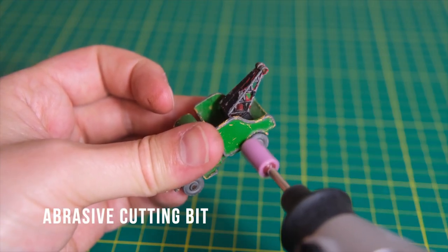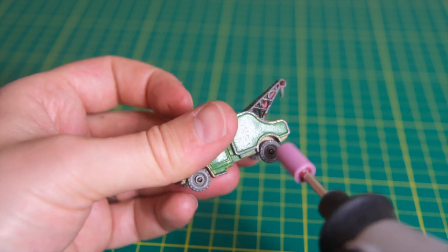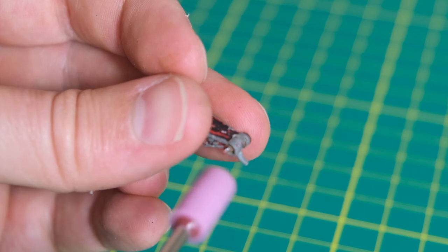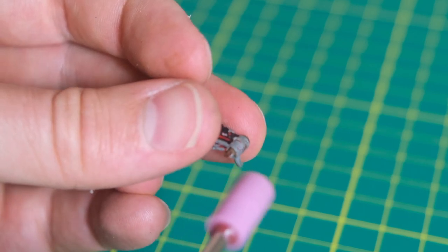First up the crimps on the axle ends are ground down using my abrasive rotary tool attachment. And then I do the same to remove the broken tow hook still clinging onto the jib.